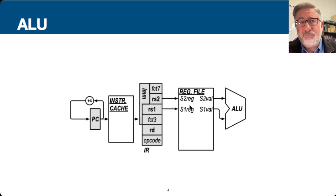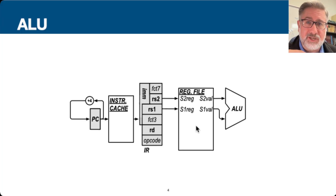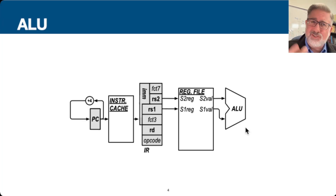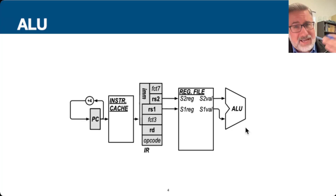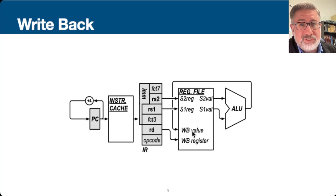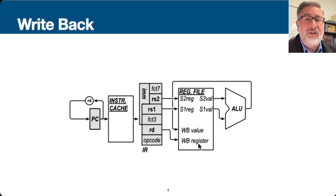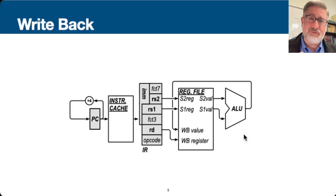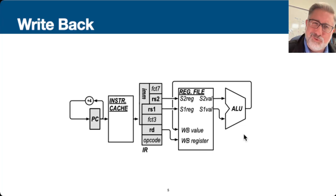For a typical data processing instruction, we take RS1 and RS2, use those addresses to look up values in the register file, take those values, and supply them to the ALU. The ALU does some math and puts the result back in the register file at the address specified by RD. So the ALU result comes to a writeback value port, and RD is our writeback register telling us where in the register file we're storing the result. That works well for R-type instructions.